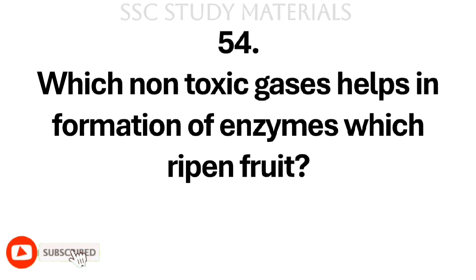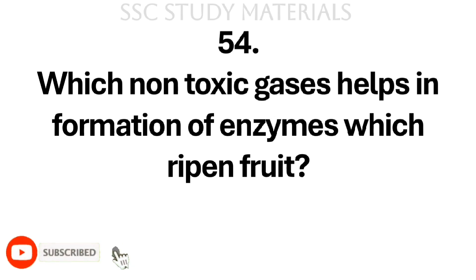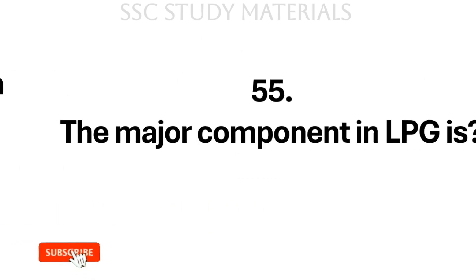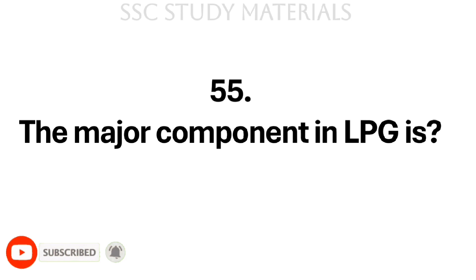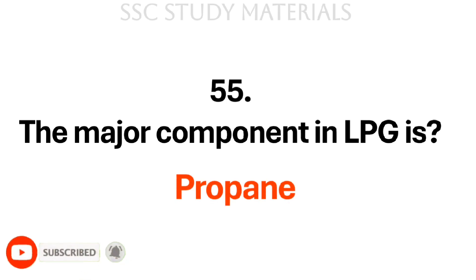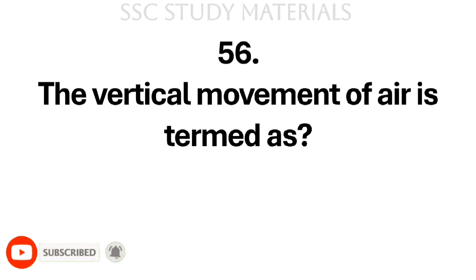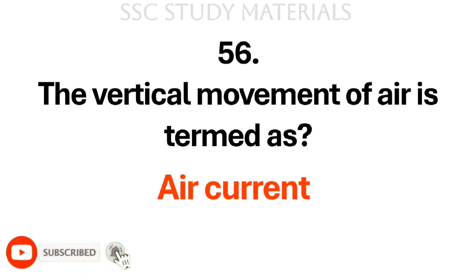Question No. 54: Which non-toxic gas helps in formation of enzymes which ripen fruit? Answer: Acetylene. Question No. 55: The major component in LPG is? Answer: Propane. Question No. 56: The vertical movement of air is termed as? Answer: Air current.